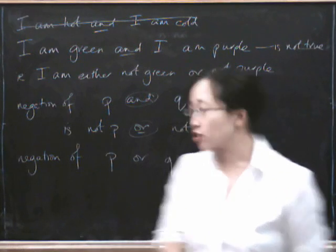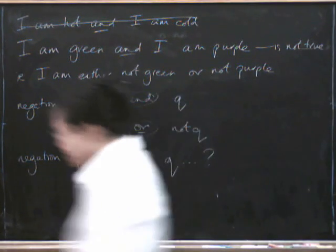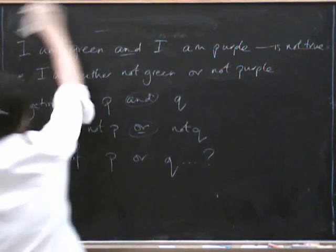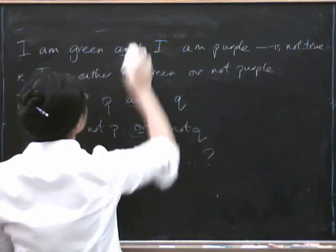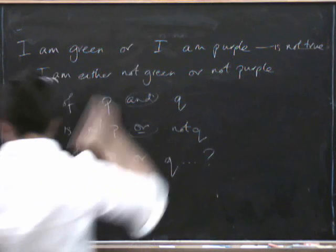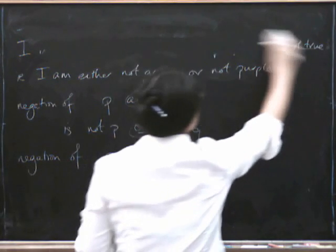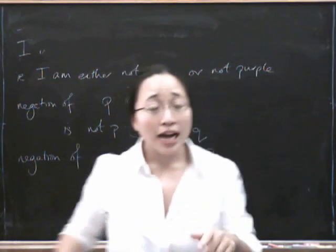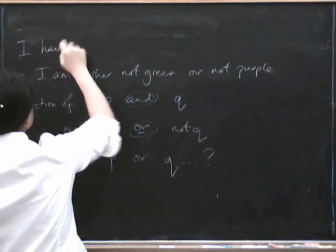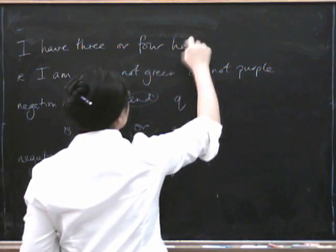Okay, so what's the negation of P or Q? Let's think about this silly example I have up here and turn it into an OR statement. So how about I say, I am green or purple. Or perhaps, let me think of another one. I've got a better idea. How about if I say, I have three or four heads.